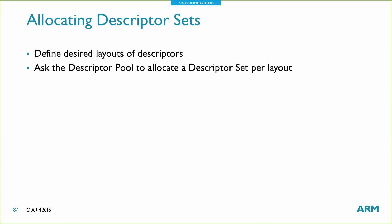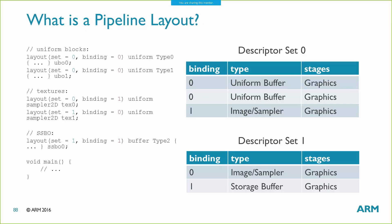Now we have our descriptor pool and our layouts, and we can allocate some descriptor sets — that's the easy part. You take your layout objects and pass them into the allocate function in the descriptor pool, which returns back some number of descriptor sets based on the number of layouts you passed in. Now you have a bunch of descriptor sets. The pipeline layout is sort of a layout of layouts — it's the overall signature, the thing that ties everything together. This is the real instance of that contract between the API and the pipeline shaders.